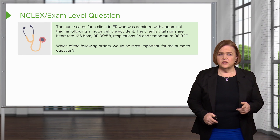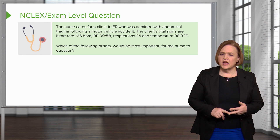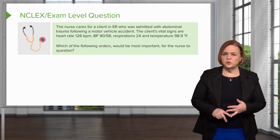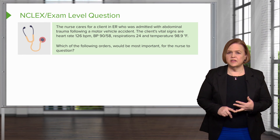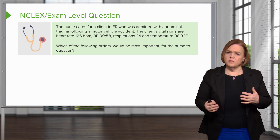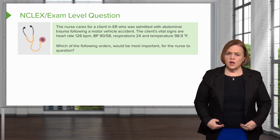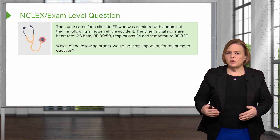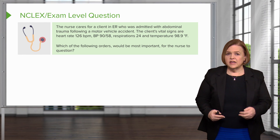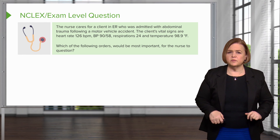The client's vital signs are heart rate 126 — that's high. Blood pressure 90 over 58 — that's low. Respiration is 24, and temperature 98.9. What concerns me is I'm in the ER for an abdominal trauma, and my biggest concern would be bleeding. I know they've had a motor vehicle accident. Their heart rate is fast, their blood pressure is low — those red flags are going up for me.